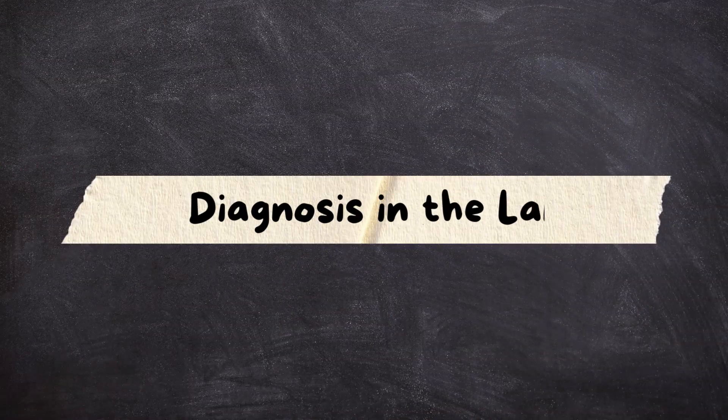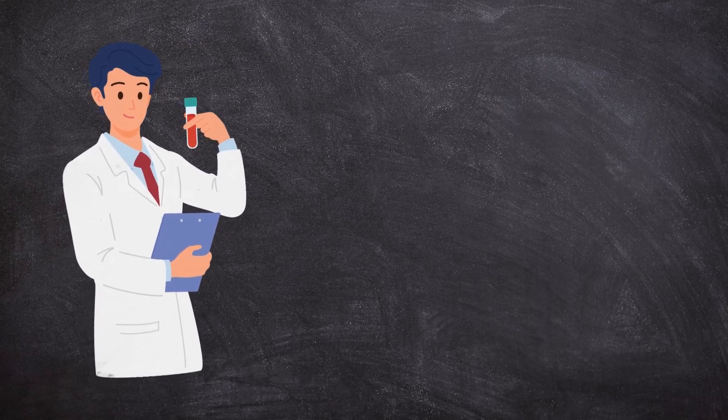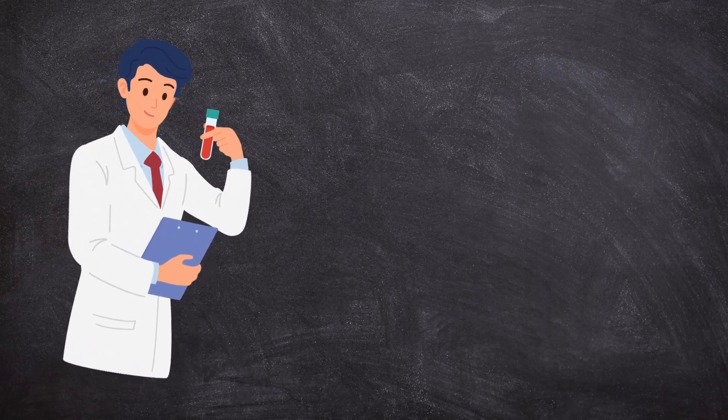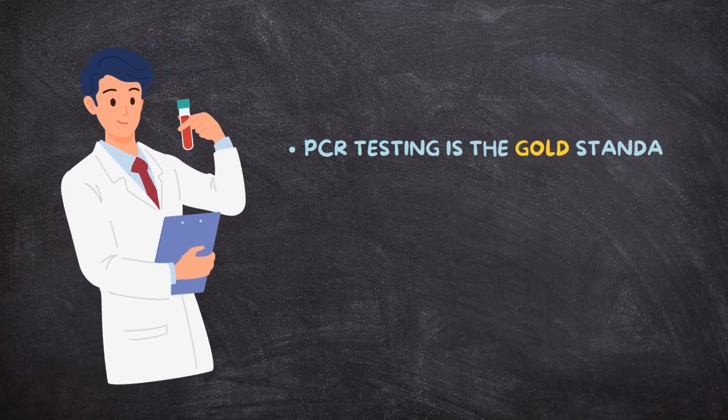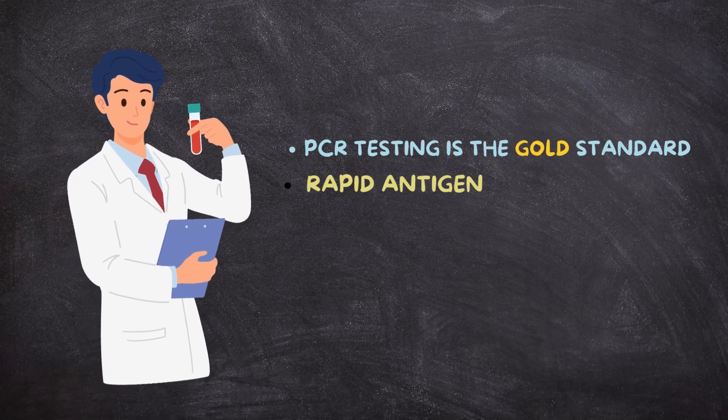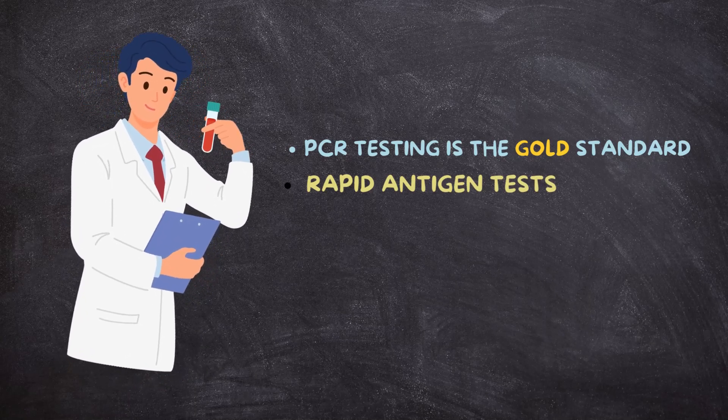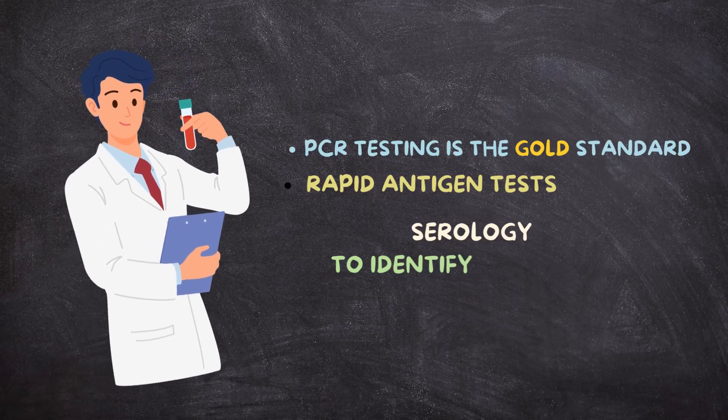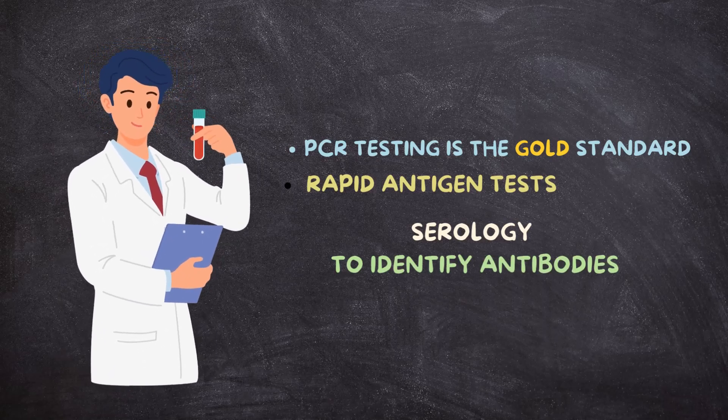Diagnosis in the lab: Medical lab technologists play a crucial role in diagnosing HMPV. PCR testing is the gold standard for detecting HMPV RNA. Rapid antigen tests are also available but are less sensitive. In some cases, serology is used to identify antibodies during infection.